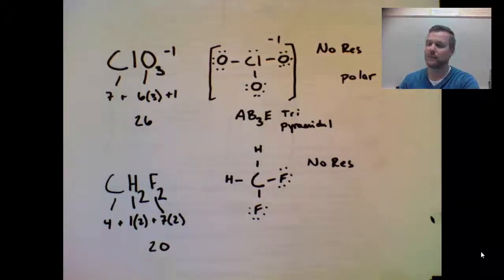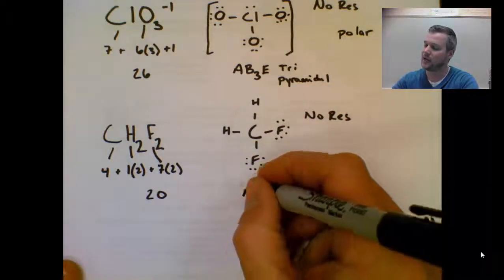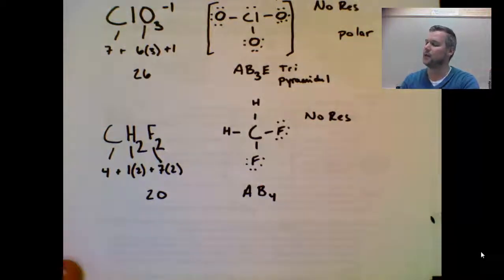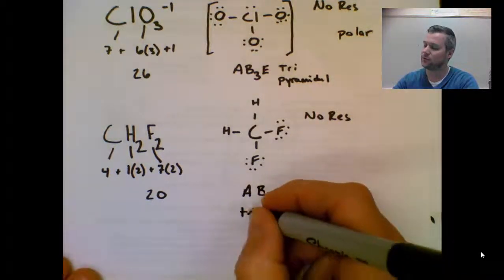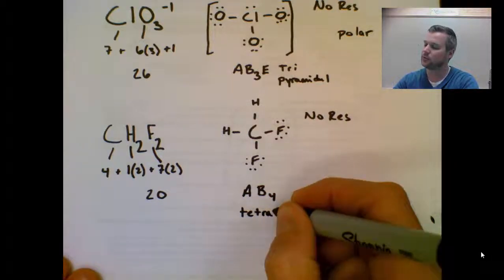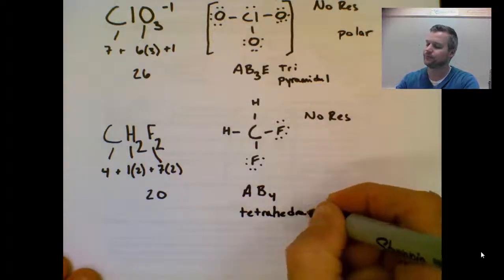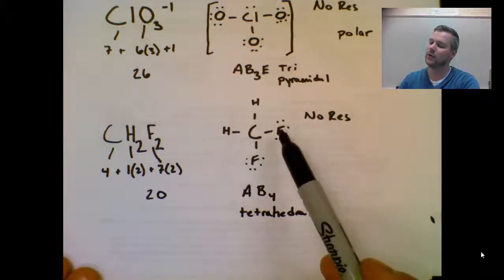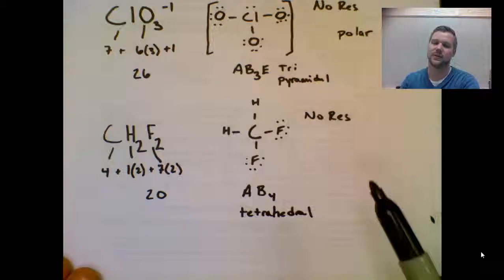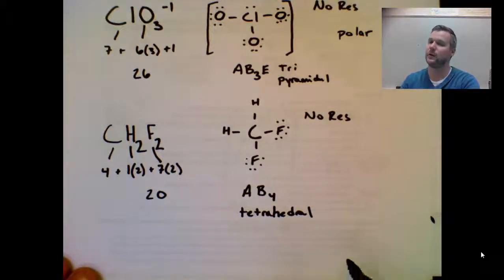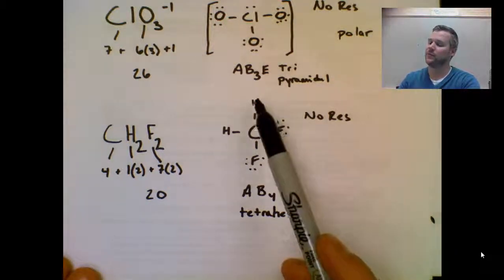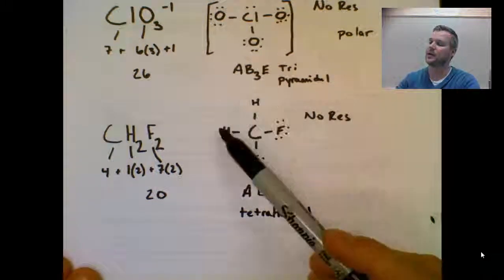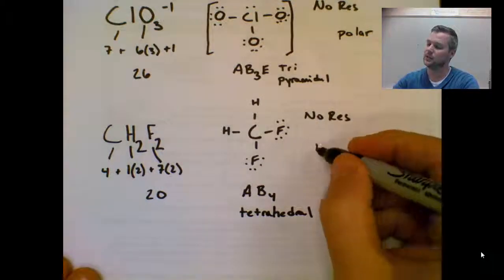So finally, CH2F, we have a central atom, A. Four bonds, there's four on the carbon. That makes it AB4, which is tetrahedral. Tetrahedral is completely surrounded by atoms, but we have fluorine atoms and we have hydrogen atoms, which have different electronegativities, creating different dipoles. So in this case, electrons flow from the hydrogens into the fluorines. This will be the negative side of the molecule. This is the positive side of the molecule. So this is indeed polar.